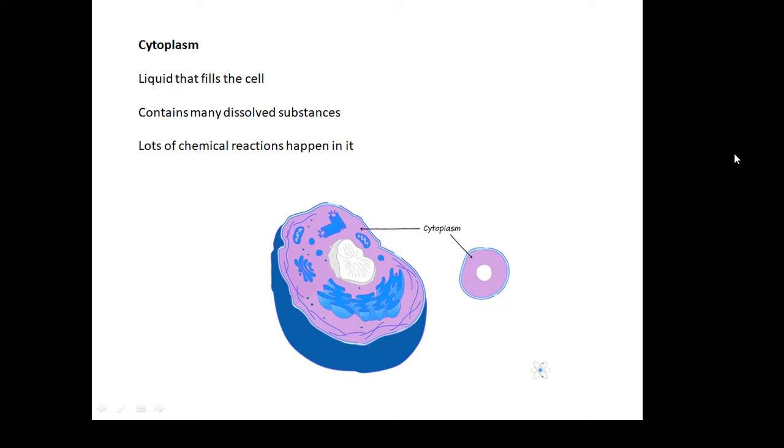Cytoplasm is the kind of liquidy jelly that fills the cell. It's got lots of stuff dissolved in it, and there's lots of chemical reactions happening in it. That's the cytoplasm.